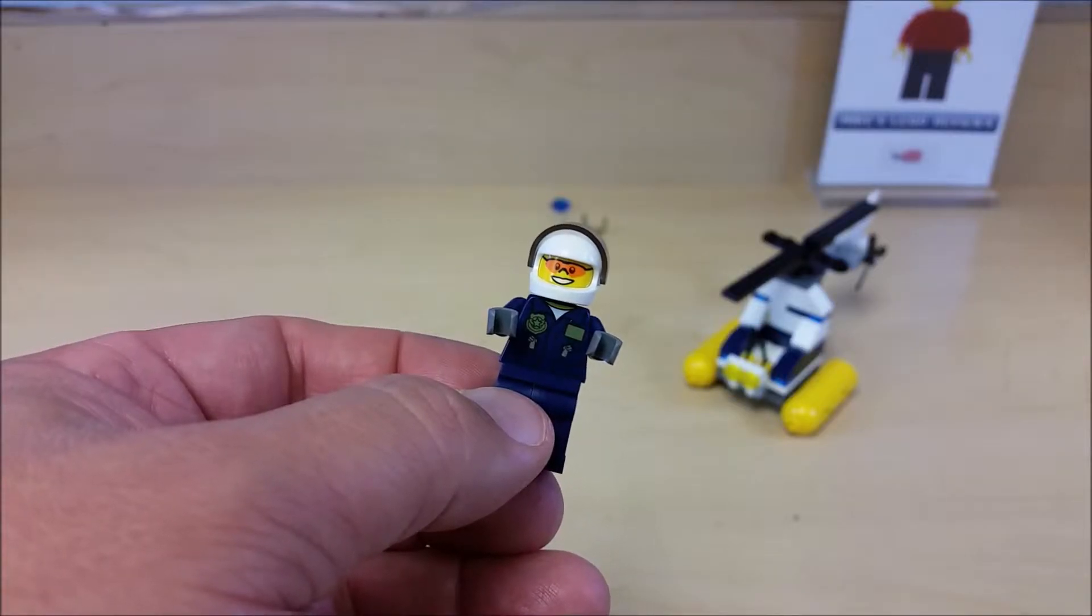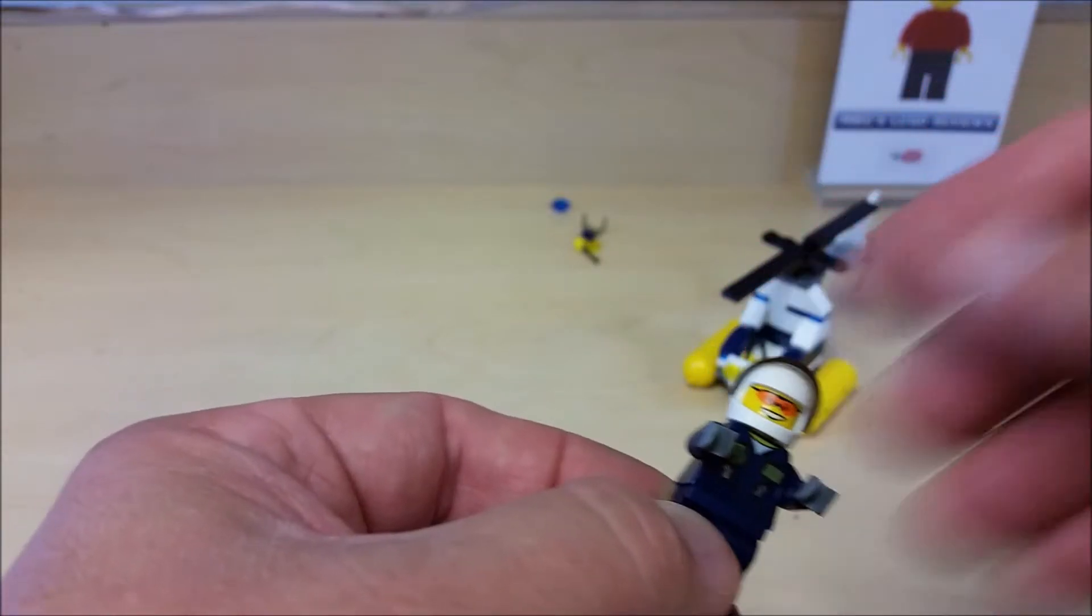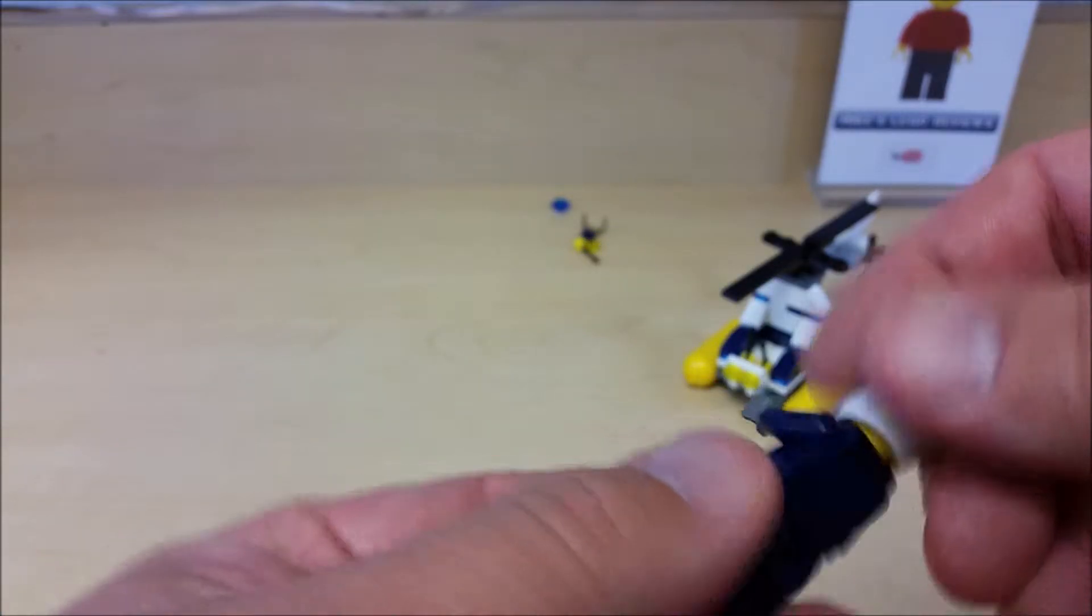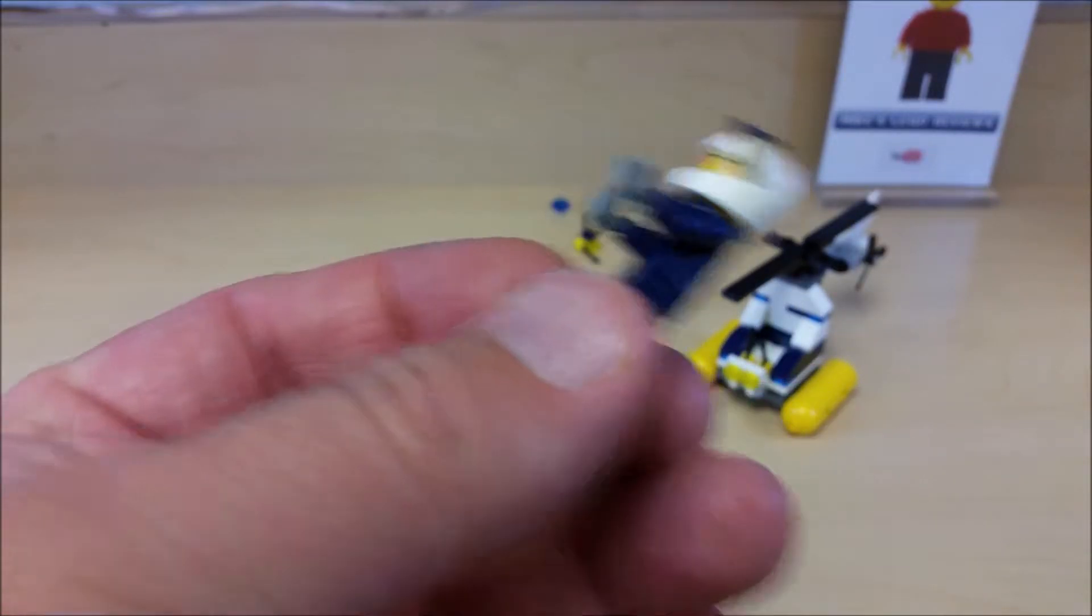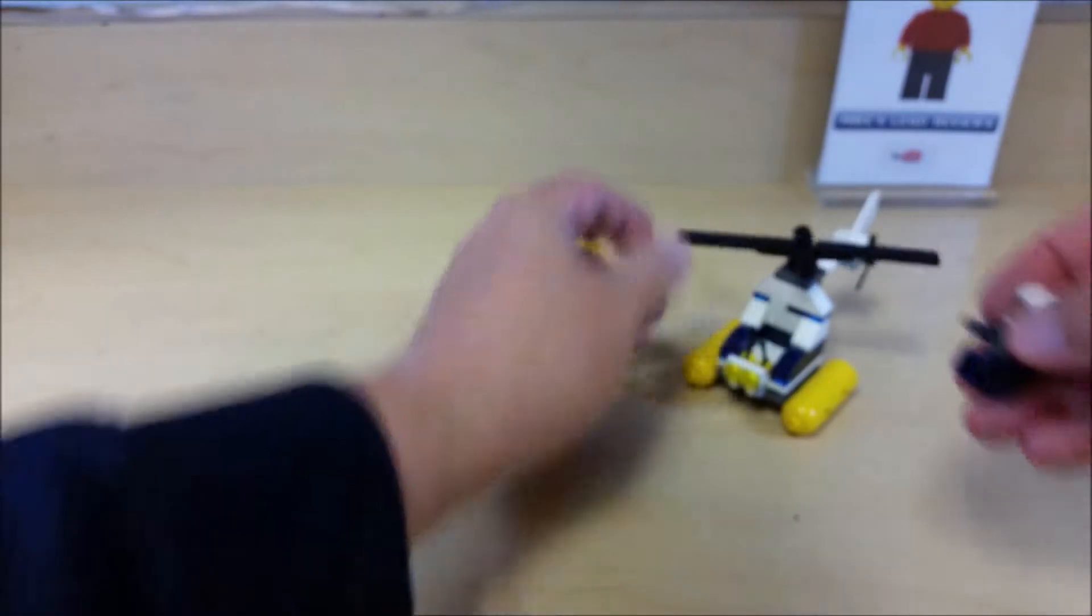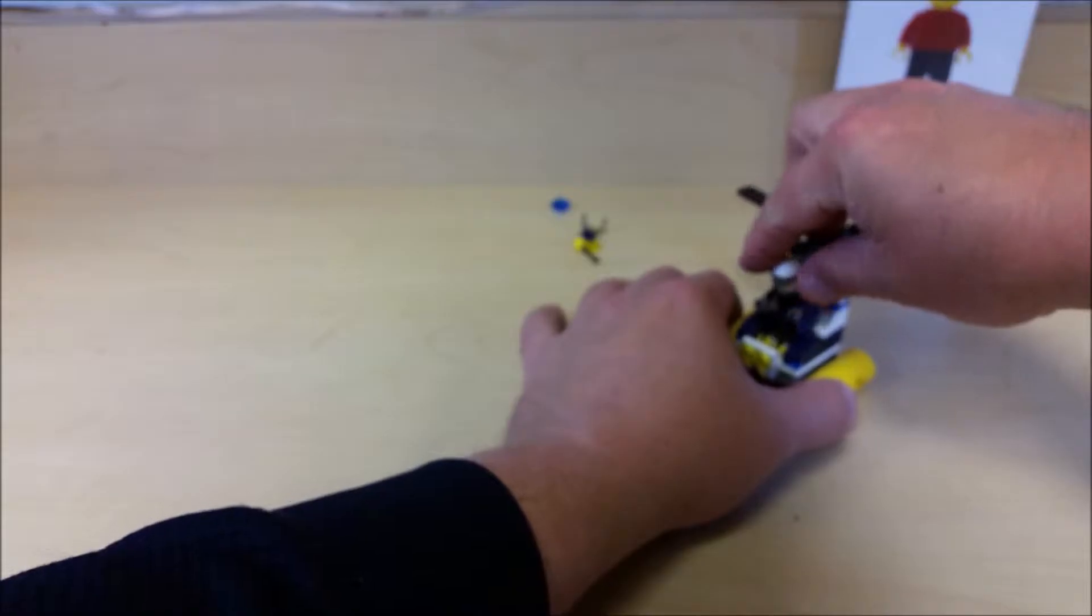Here's the minifig. He's a police officer with the visor. He's got the polarized sunglasses on, as you can see. He's got a nice front painted on and just a plain back, and we can just fit him in here quickly into the helicopter.